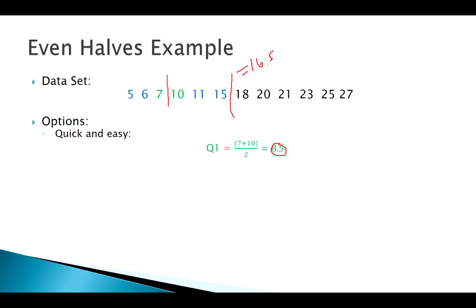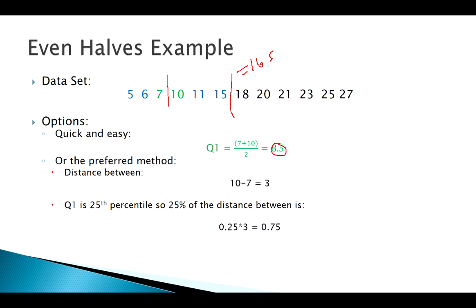That's just treating this like the median and saying, okay, 7 plus 10 divided by 2 gives us 8.5, right in between those two numbers. And that's okay. You might see it done that way, but I think the preferred method, if we're going with the definition here that it is the 25th percentile, what we really want to do here is think about it like this. Well, the distance between these two numbers, here 7 and 10, is 3, right? So it's the 25th percentile. So we really want to go 25% of that difference, right?